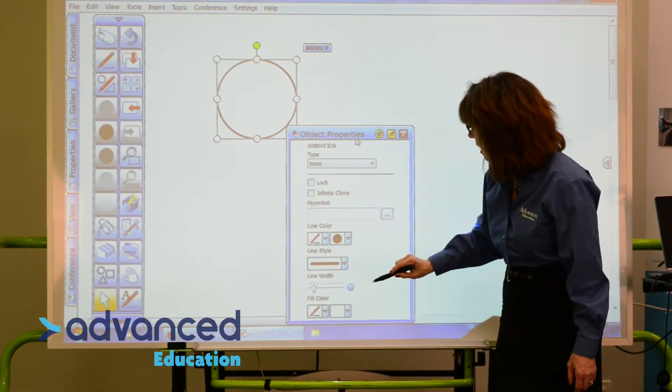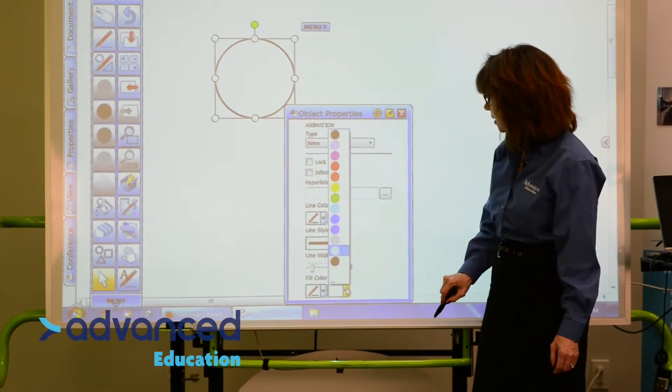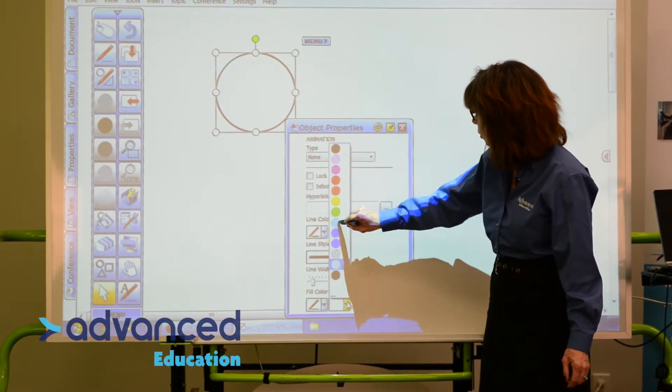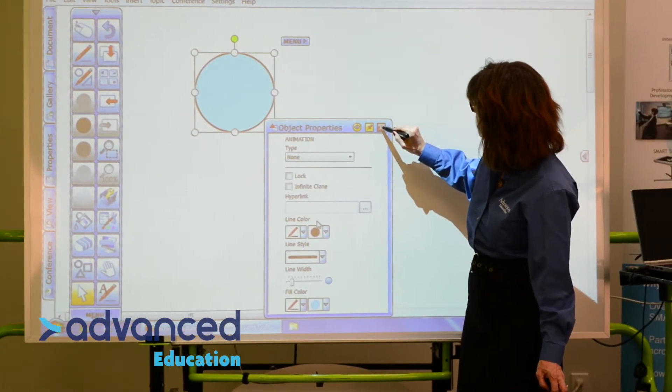For instance, I can change the line style, the thickness, the width, but really all I want to do is change the color. So we'll make it blue. There we go. And we'll close that Object Properties menu.